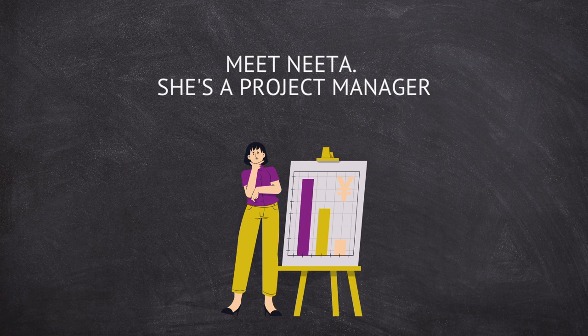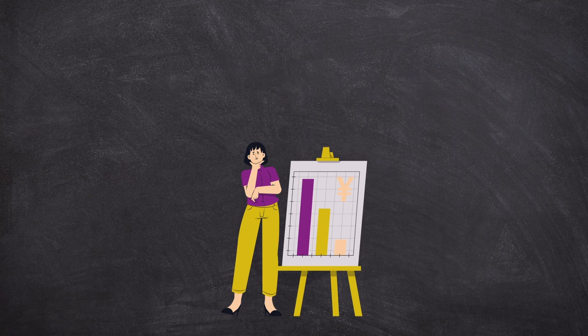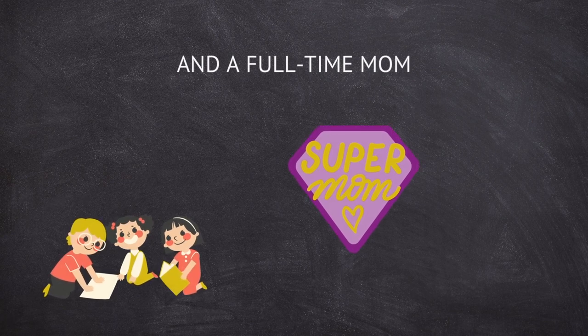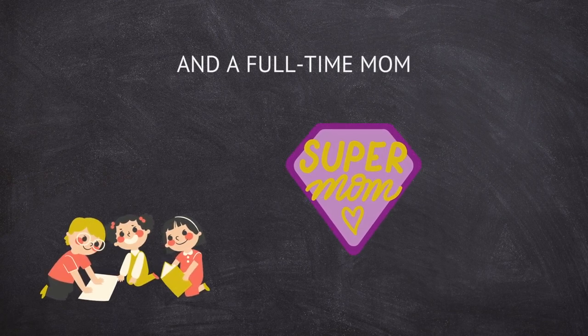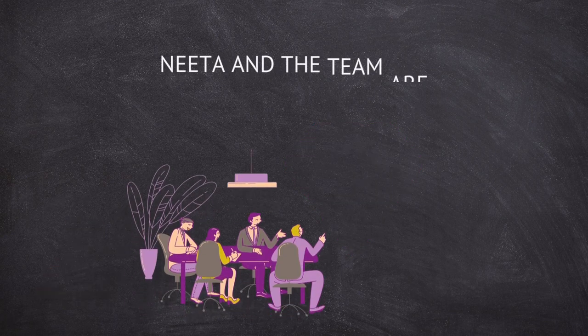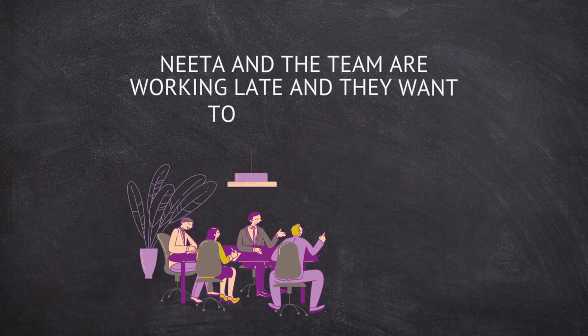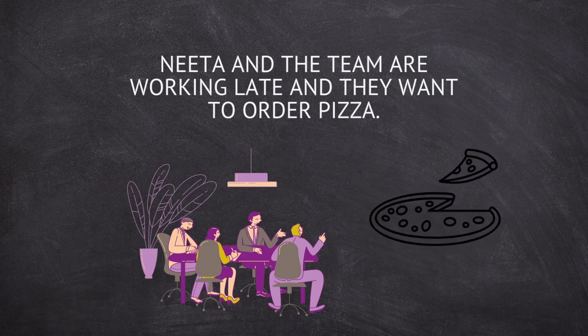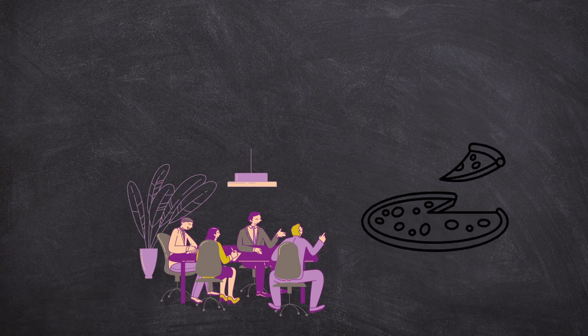Let's look at an example of how we define fitness criteria metrics. Here we have Nita. She's a project manager and she's a mom to three kids. Her team is working late and Nita has decided to order pizzas for the team. What attributes do her team care about in a pizza delivery service?